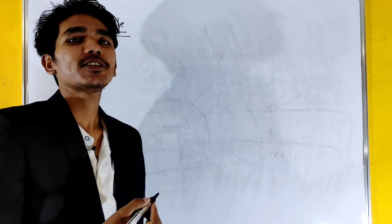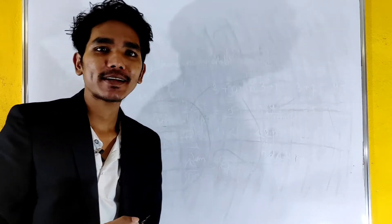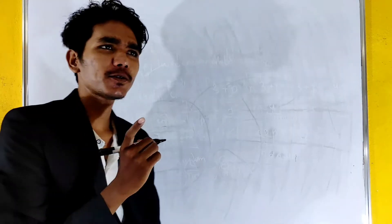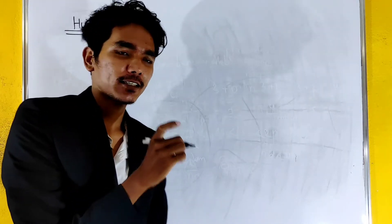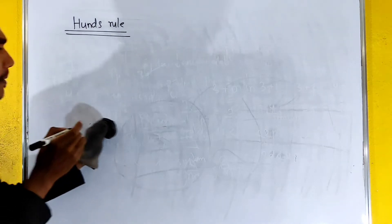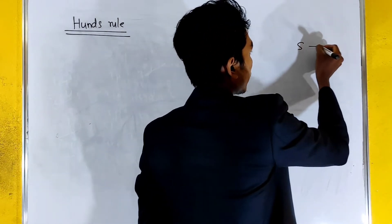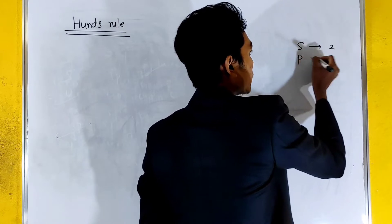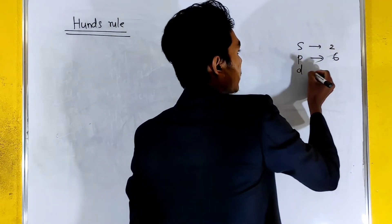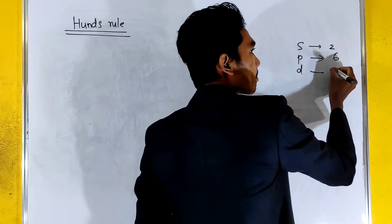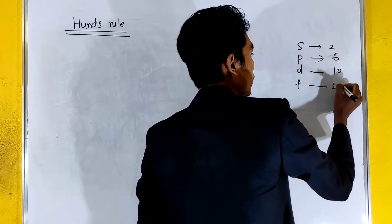Next interesting part is the rule. What is the rule? The rule is the pair of electrons. The orbital is the electron. P is 6, D is 10, F is 14.